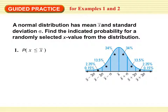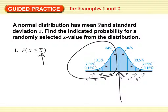All right, let's practice a few. A normal distribution has a mean x-bar and a standard deviation sigma — find the indicated probability for a randomly selected x value from the distribution. Okay, something less than x-bar. If we add 34 plus 13.5 plus 2.35 plus 0.15, we should get half — and we do, we get 0.5. Because it is normally distributed, it's symmetric, so it's going to be half.